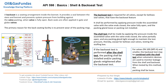Before getting into the pressure test details given in API 598, let us look into various clauses and procedures which have to be followed for shell test and backseat test. The shell test shall be made by applying the pressure inside the valve assembled with the valve ends closed, the valve partially open, and any packing gland tight enough to maintain the test pressure.